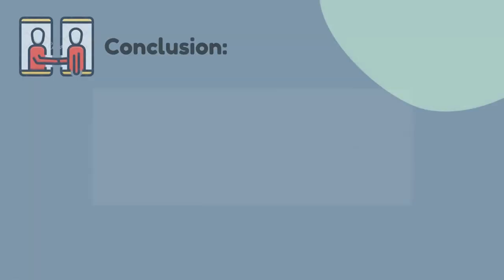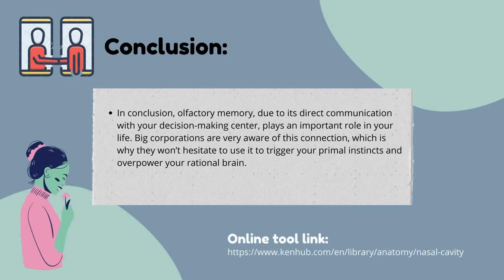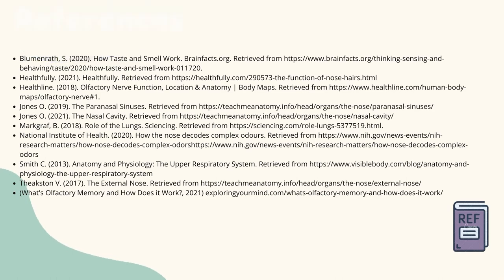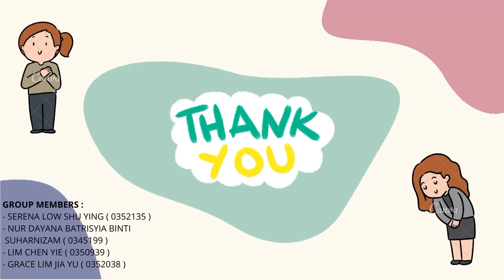In conclusion, olfactory memory, due to its direct communication with the decision-making center, plays an important role in our lives. Big corporations are very aware of this connection, which is why they use it to trigger primary instincts and overpower the rational brain. Here are our references and online tools. Thank you for listening!